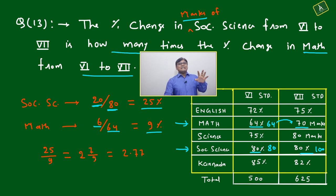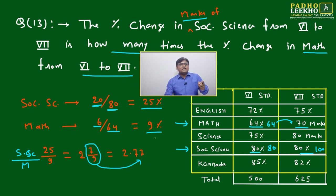Now we have to find how many times, not percentage, how many times. Social Science out of Math means 25 divided by 9, which will be 2 and 7 by 9. 1 by 9 we know is 0.11, then 7 by 9 is 0.77. We can write 25 by 9 or 2 and 7 by 9 as a mixed fraction.